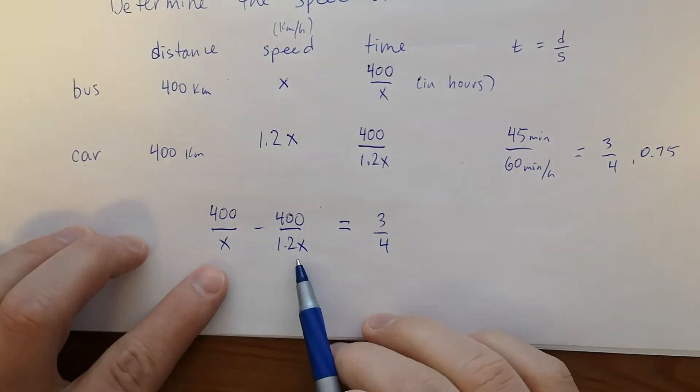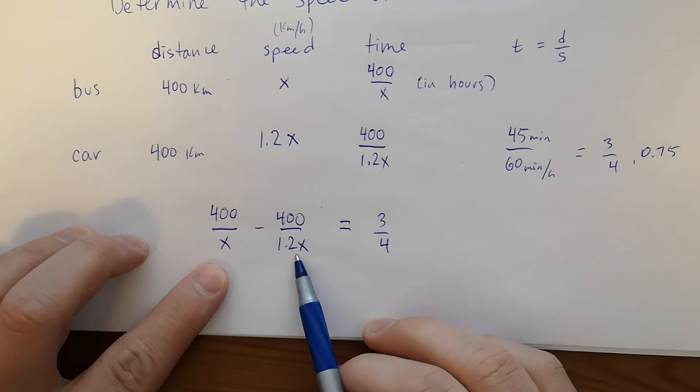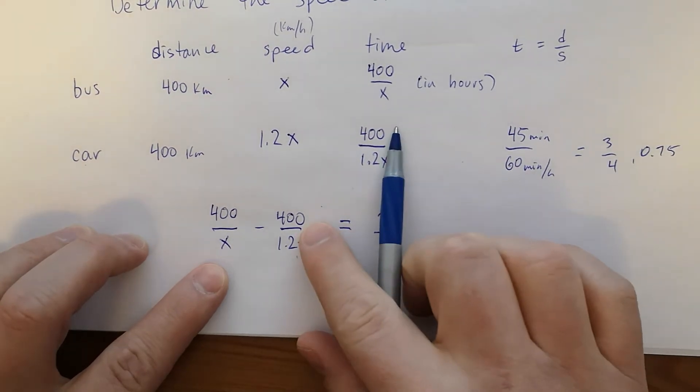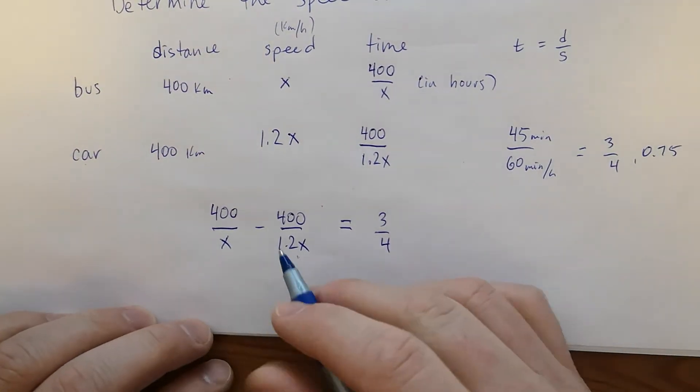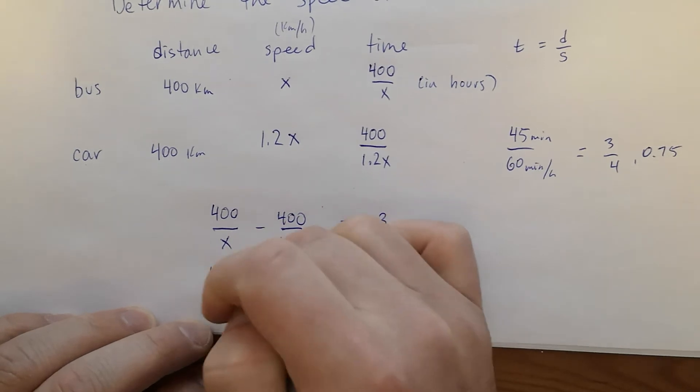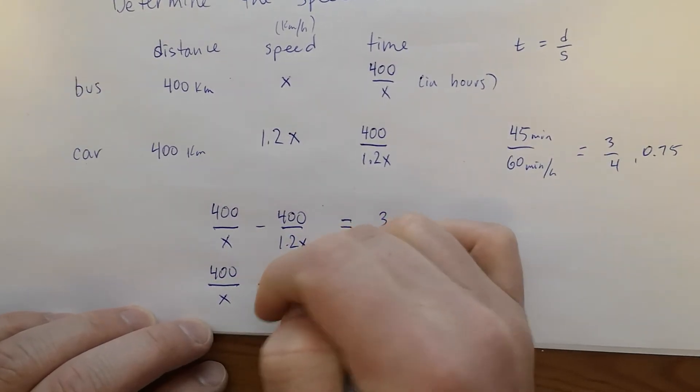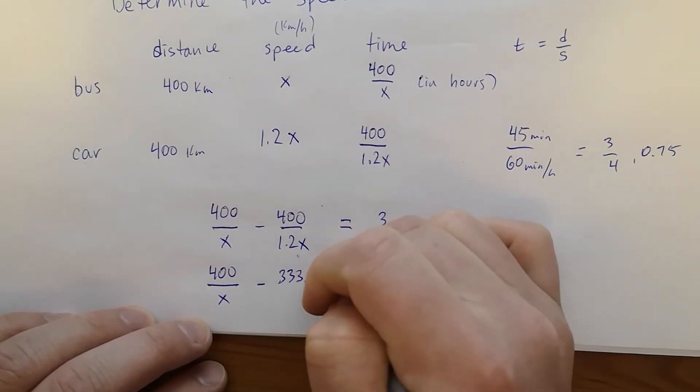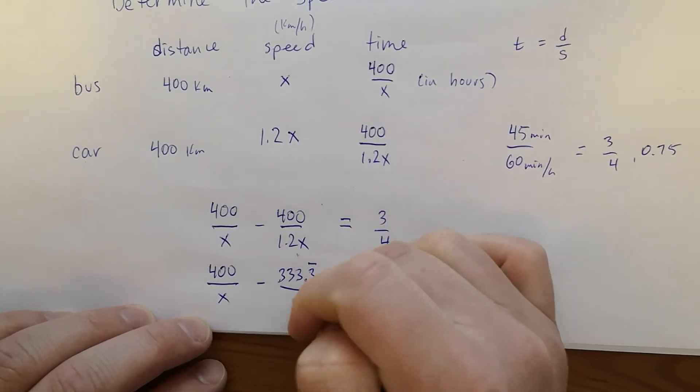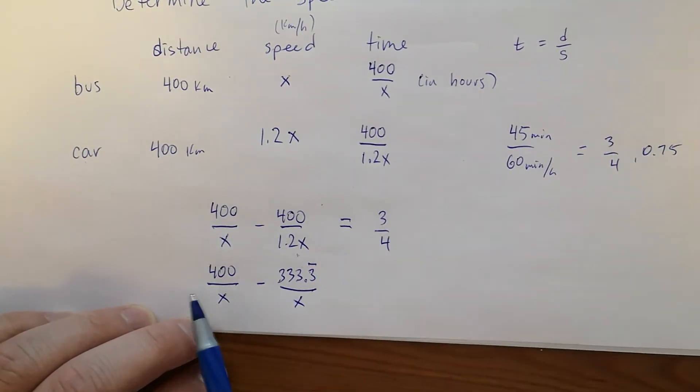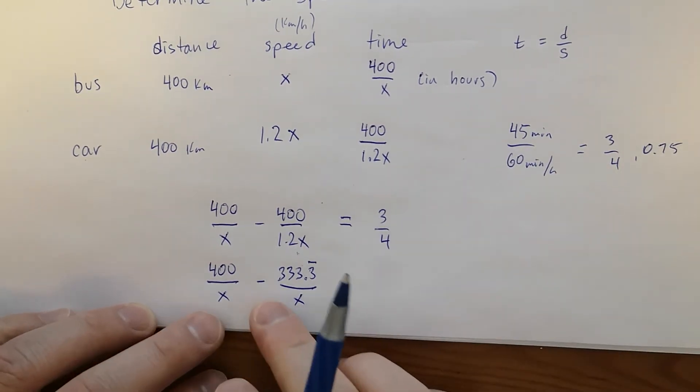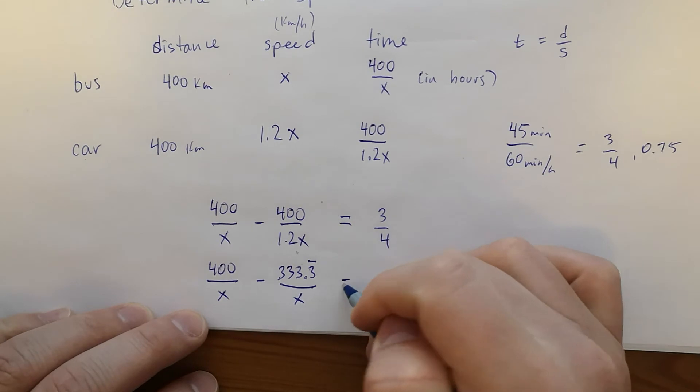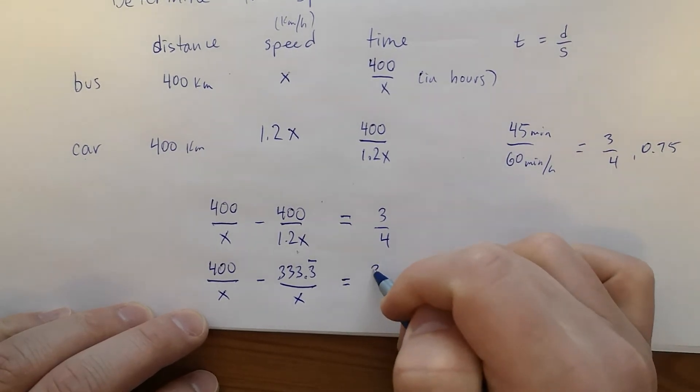Okay. Now we need a common denominator over here. What you could actually do is just divide 400 by 1.2. It gives you a decimal, but I'm going to be able to handle that. It's 333.3 repeating, and now it's over x. Alternatively, you could have multiplied 400 by 1.2 and your numbers would be a bit nicer, but our denominator wouldn't be as nice.